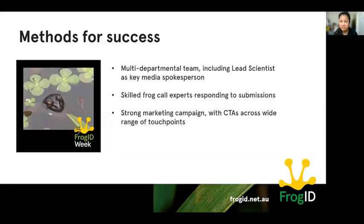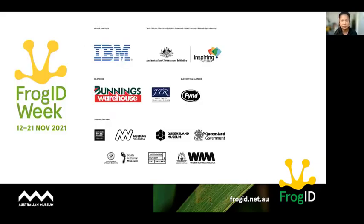These various approaches — through the support of different departments, partnerships, and FrogID Week events — illustrate some of the ways that FrogID is able to increase national reach. It really helps having a key spokesperson from our lead scientists and other team members, and radio helps a lot. All of our key points of contact with citizen scientists relay our key calls to action. Thanks for tuning in — I'm happy to meet outside of session to talk about FrogID Week's communications approaches further.